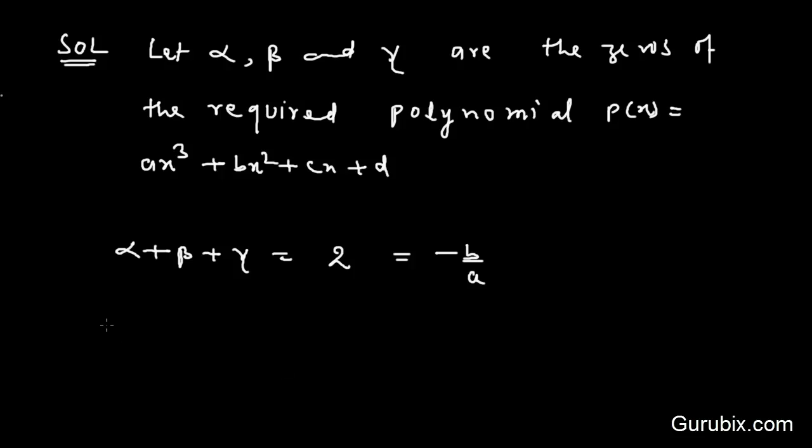Now we are given alpha into beta plus beta into gamma plus gamma into alpha is equal to minus 7.